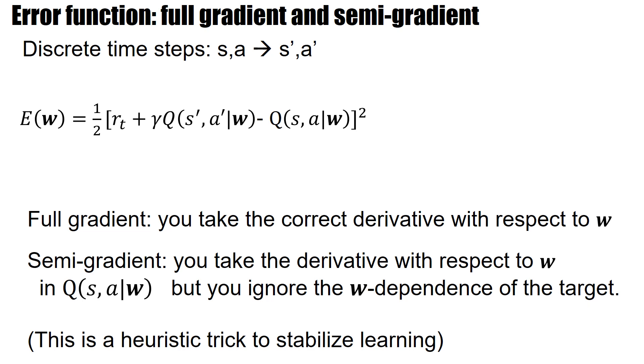So the idea is we have an error function. Normally, the error function would correctly have a dependence here on W and there on W. But we ignore this, and we say we only take the semi-gradient. The semi-gradient ignores the dependence of the term, which is S prime A prime, and only takes the one that is Q of SA. And this is a heuristic trick to stabilize learning, which works very well.